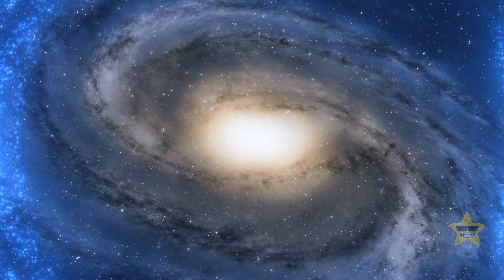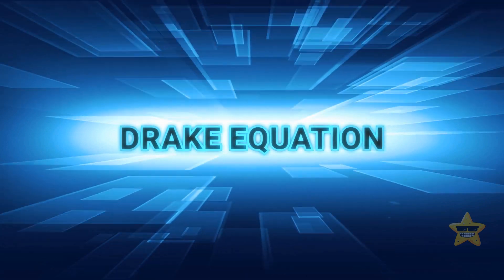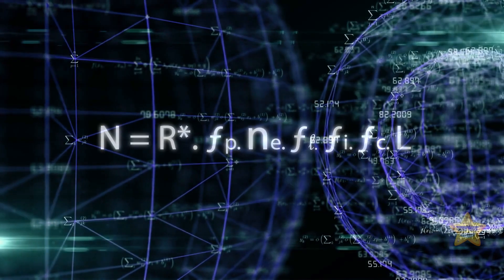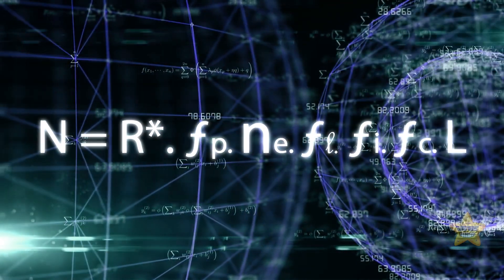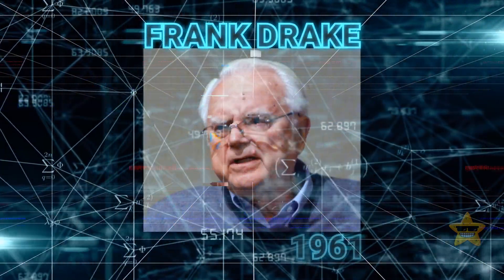What's the likelihood of other intelligent civilizations existing out there? Well, there's a famous formula called the Drake Equation. It's a mathematical tool to guess how many civilizations from outer space might be able to talk to us in our Milky Way galaxy. It was made by a scientist named Frank Drake in 1961.